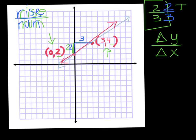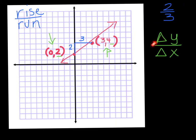This little triangle symbol means change — kind of like the difference, or how much it changed by. So these two triangles just mean change. I'm going to show you what that means.